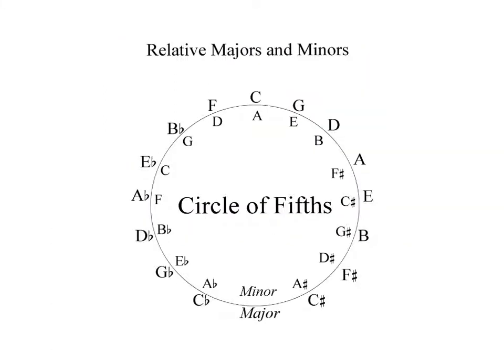Here's the circle of fifths again. We are going to be drawing a new key. I think it's E minor. So E minor is right here. And that has one sharp in it. So we will remember that for the next slide.